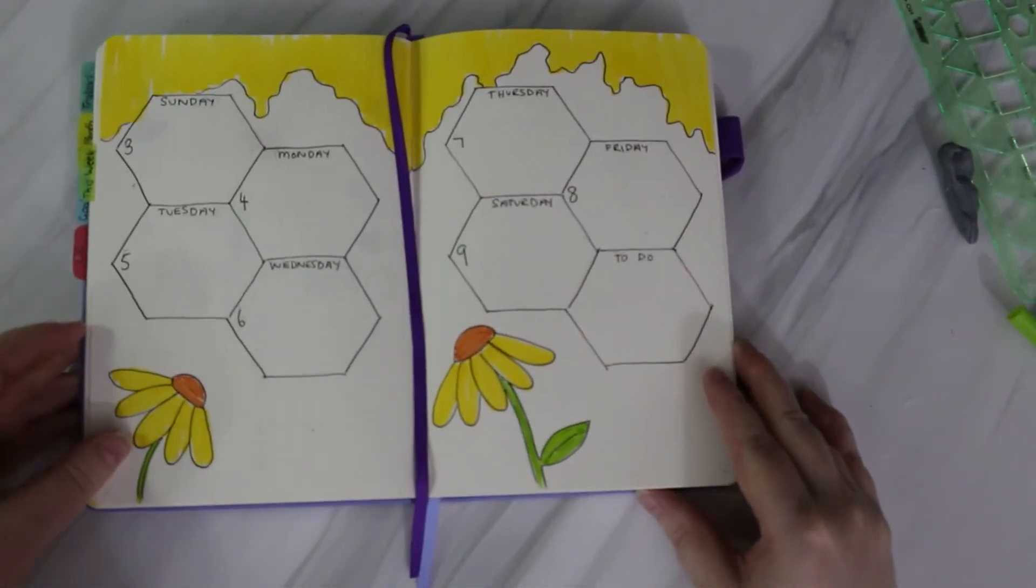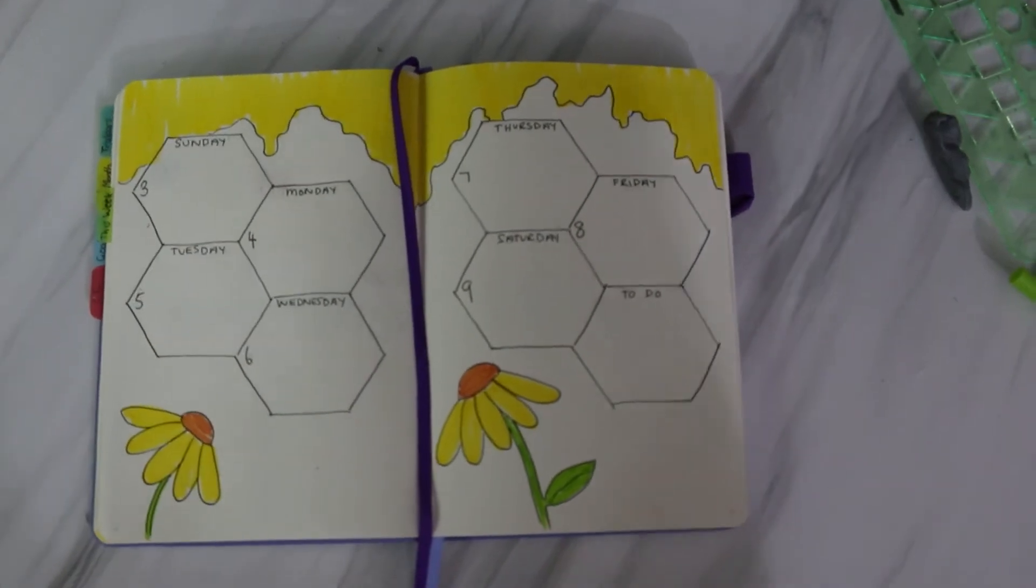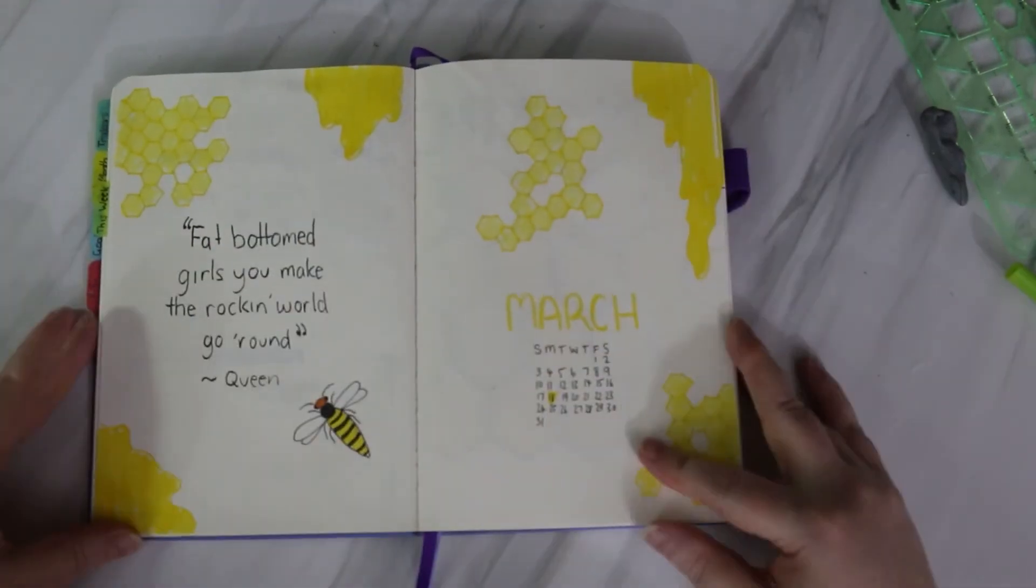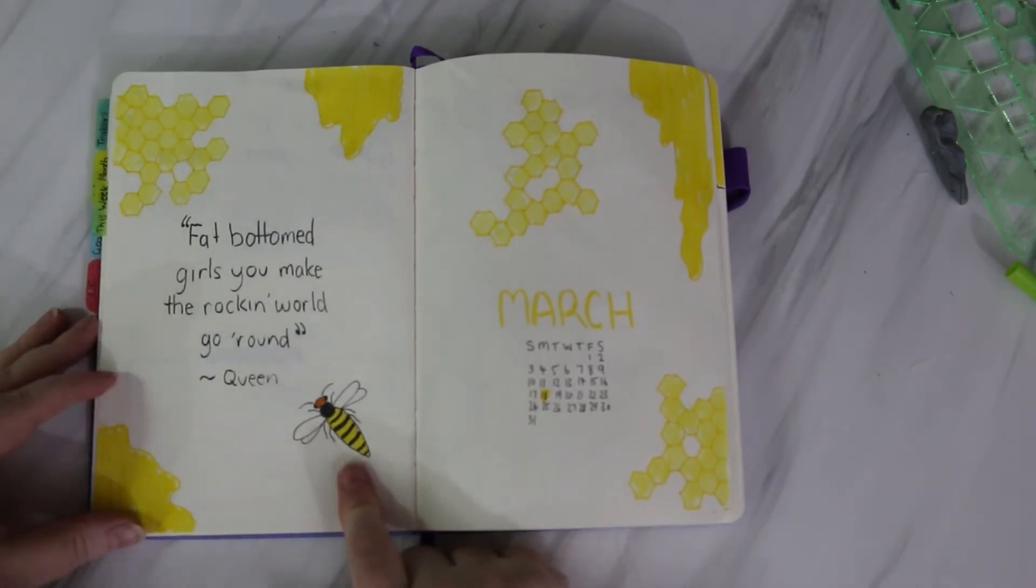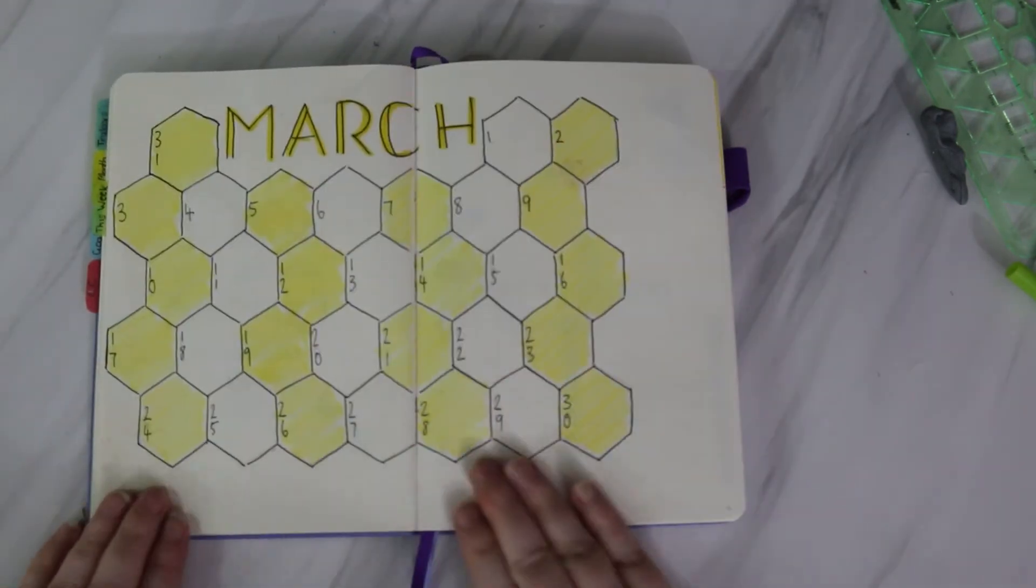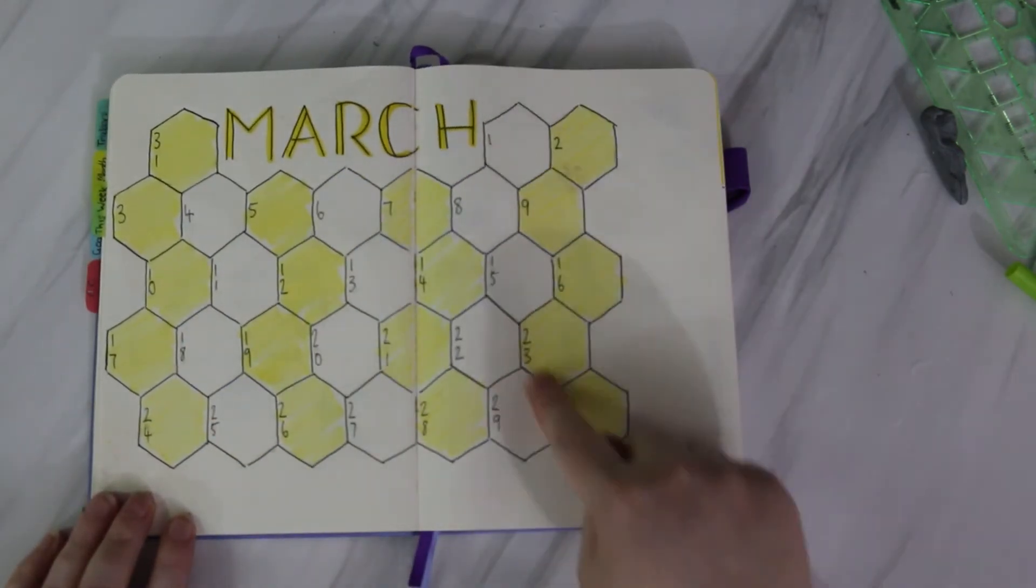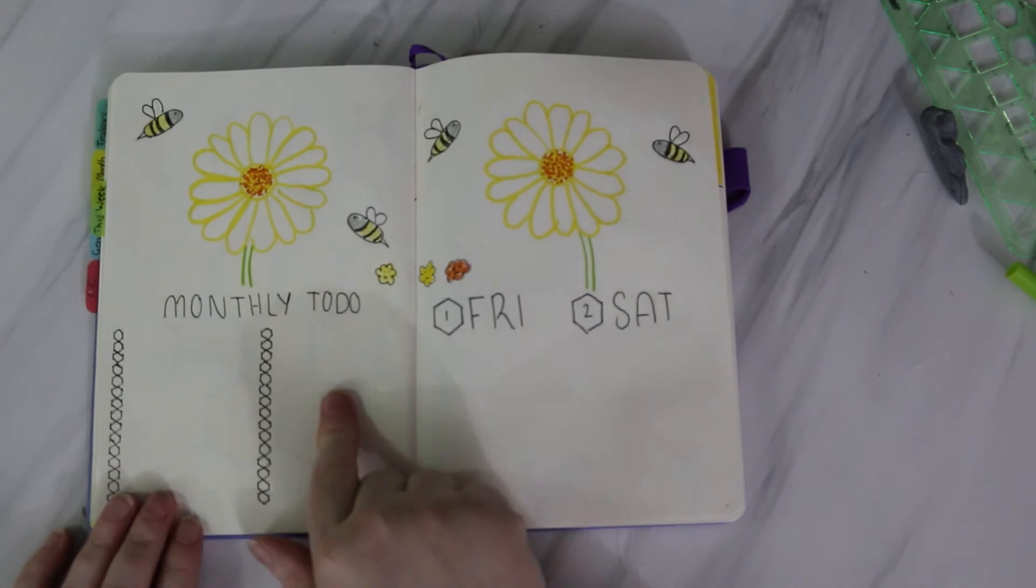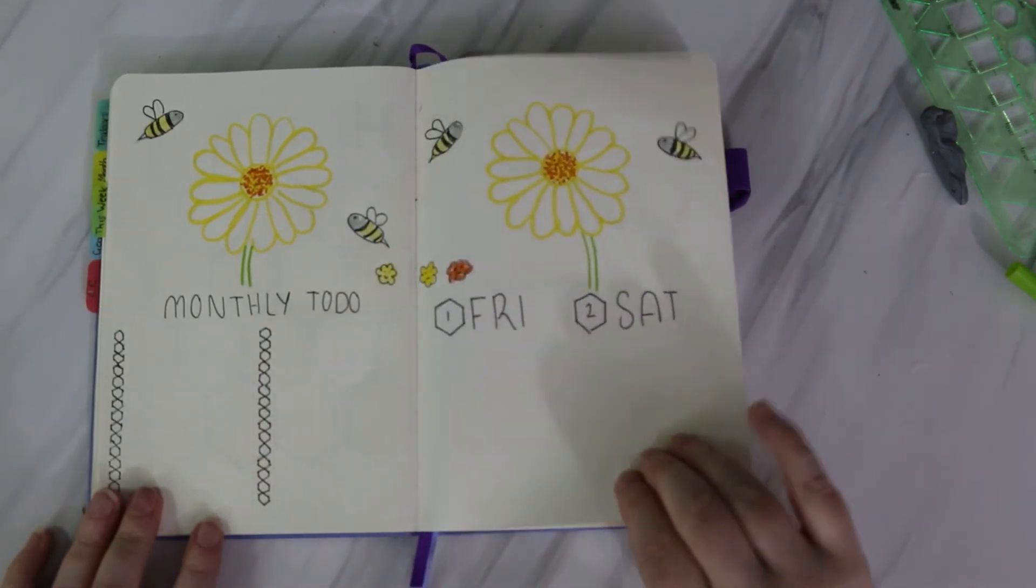So here we'll do an overview of the bullet journal spreads this month so far. Don't mind me, my camera was crooked. We'll start off with the March introductory page or the title page with some honeycomb, some honey, the queen bee and the queen brood, and my birthday colored in yellow on the little calendar. Then we have the month with alternating days colored in yellow so that I know which days are what. We have my Friday and Saturday of the first week of March, my monthly to-do, and then we have these flowers that will be my mood tracker.